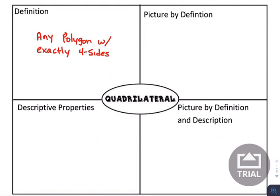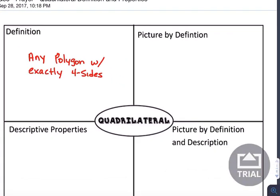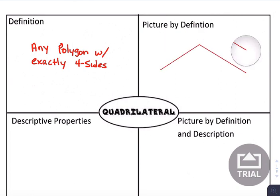Break down the word quadrilateral: quad means four, lateral means sides. So this is literally any polygon with exactly four sides, which means it's nothing actually special in terms of how it's supposed to look. It just has four sides, it is a polygon so the sides have to be straight, but there's nothing you're trying to pattern or make special about this shape.